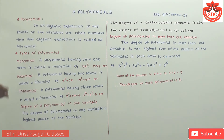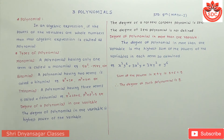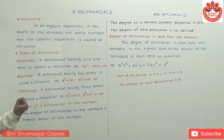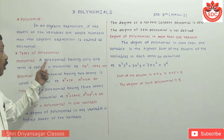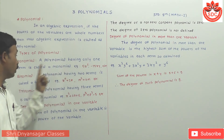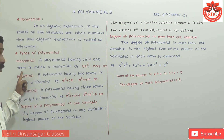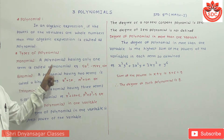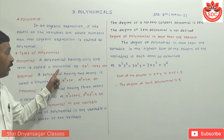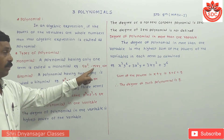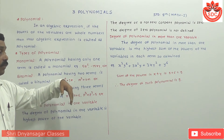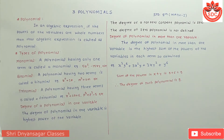There are types of polynomials. First one is the monomial. Mono means only one — a polynomial having only one term is called as the monomial. For example: 5x², 15xy, etc.